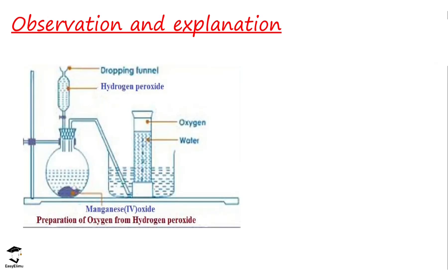First, you will observe bubbling or effervescence occurring in the round-bottomed flask. These bubbles indicate that a gas is being produced — in this case, oxygen gas. The manganese(IV) oxide in the flask acts as a catalyst, which speeds up the reaction. Hydrogen peroxide naturally decomposes to form water and oxygen gas, but this process is slow on its own. Adding manganese(IV) oxide as a catalyst speeds up that decomposition significantly.